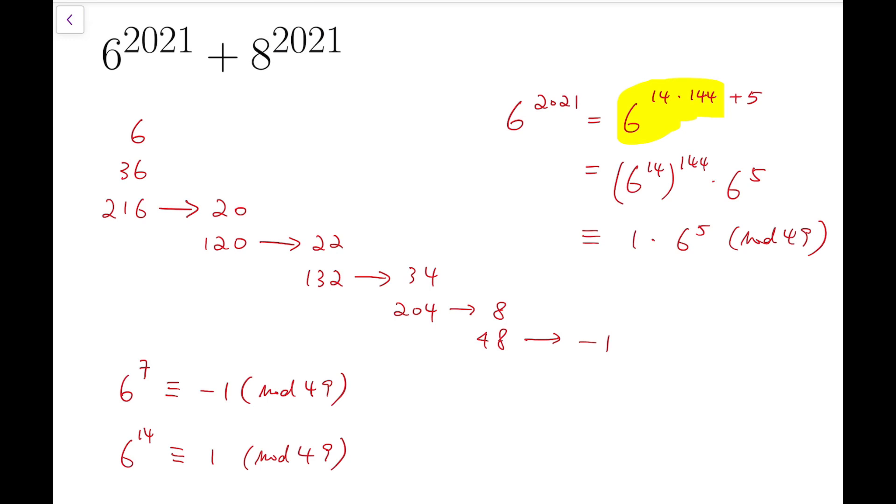Now you can compute, or simply look back into the pattern. 6 to the power of 5 is actually this number, so the remainder should be 34. So the remainder for this part is 34.